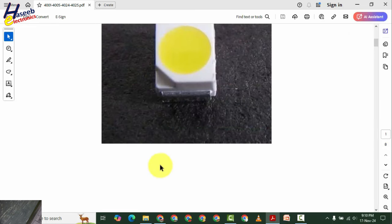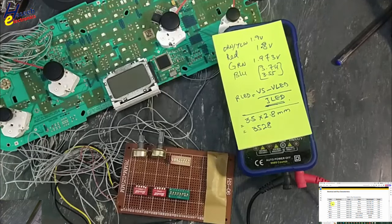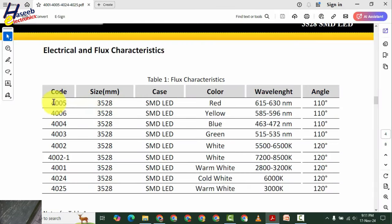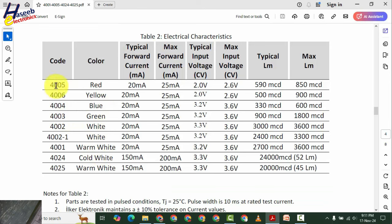This is cut side. Here are its flux characteristics. This is size code 3528 SMD LED red. This is wavelength and this is its view angle from this optical window. For this LED, its part number is 4005, maximum 630 nm wavelength, that is red color. Then 3528 size. Go to this chart. 4005 code, that is the part number. Red LED. Forward current typical 20mA and maximum allowed current 25mA. And its working voltage 2.0 to 2.6V.